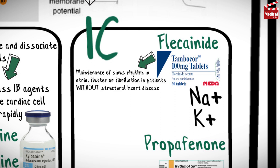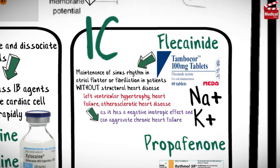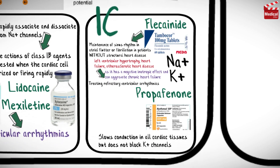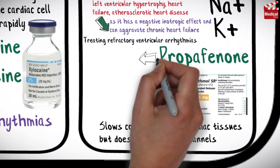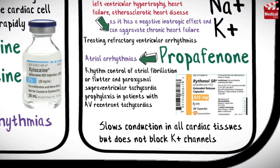Flecainide is useful in the maintenance of sinus rhythm in atrial flutter or fibrillation in patients without structural heart disease such as left ventricular hypertrophy, heart failure, or atherosclerotic heart disease, as it has a negative inotropic effect and can aggravate chronic heart failure. It is also used in treating refractory ventricular arrhythmias. Use of propafenone is restricted mostly to atrial arrhythmias, rhythm control of atrial fibrillation or flutter, and paroxysmal supraventricular tachycardia prophylaxis in patients with AV re-entrant tachycardias.